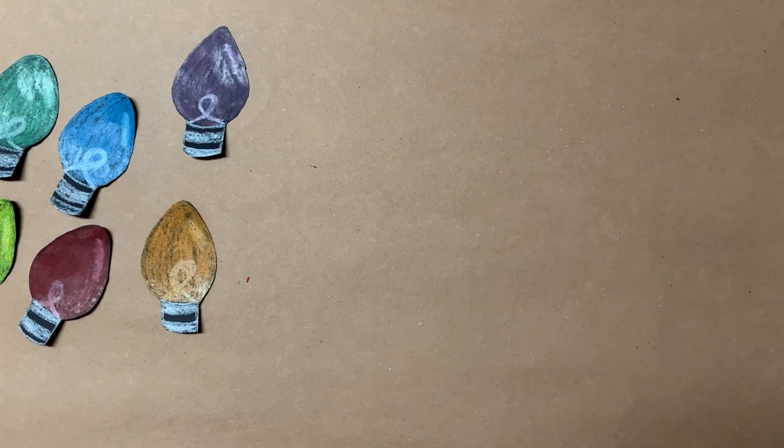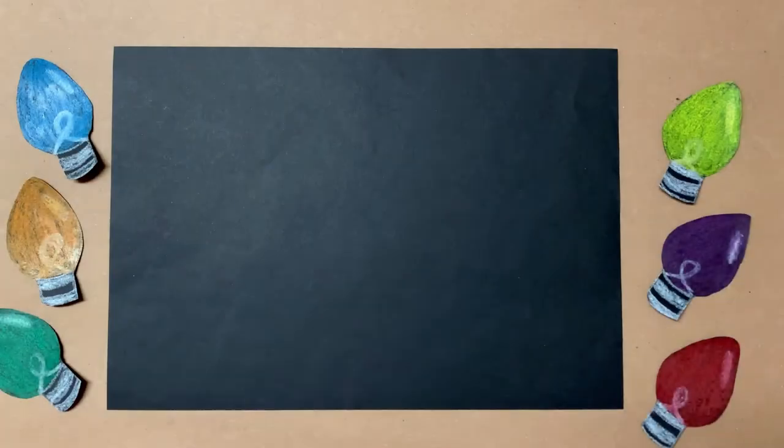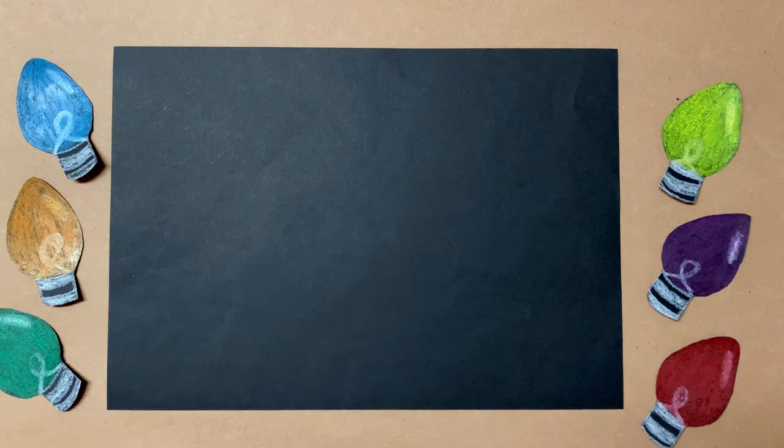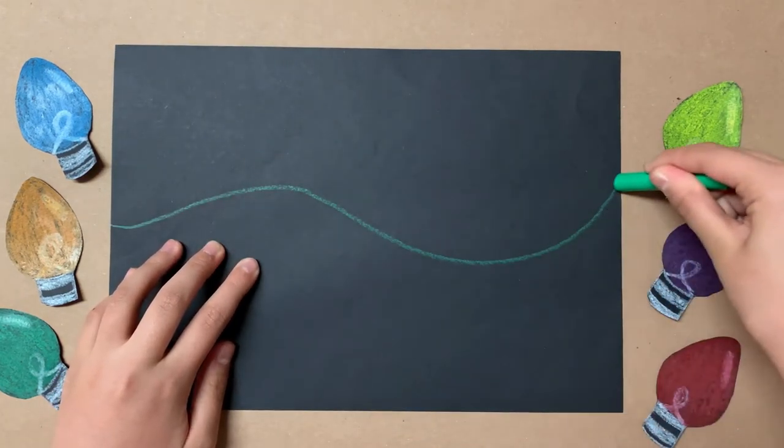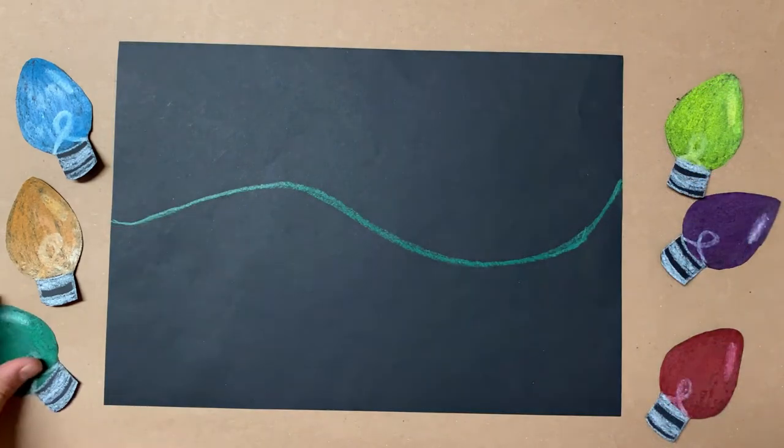Put your bulbs aside for a moment and take out your second piece of black paper. After you draw your wiggly wire, take out your already prepared bulbs.